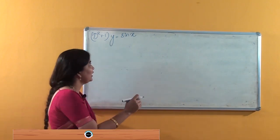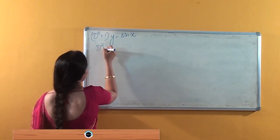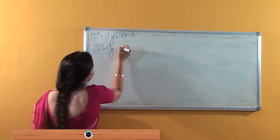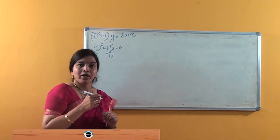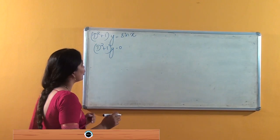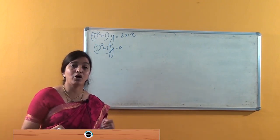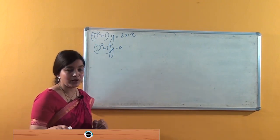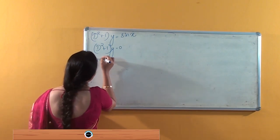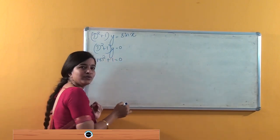To find the complementary solution, we consider the equation (D² + 1)y = 0 and find the complementary solution. To do so, we write the auxiliary equation: m² + 1 = 0.